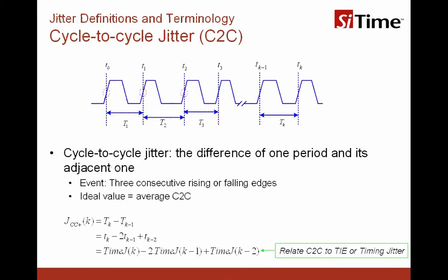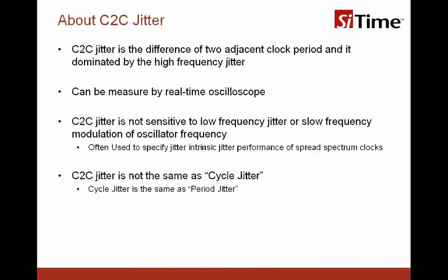The cycle-to-cycle jitter is the difference of one period and its adjacent one. It is defined by three time-stamping events of adjacent clock cycles. The cycle-to-cycle jitter reflects the high-frequency part of the jitter — it is the difference of two adjacent clock periods, dominated by high-frequency jitter. It is usually measured by a real-time oscilloscope. Cycle-to-cycle jitter is not sensitive to low-frequency jitter or slow-frequency modulation of oscillator frequency.